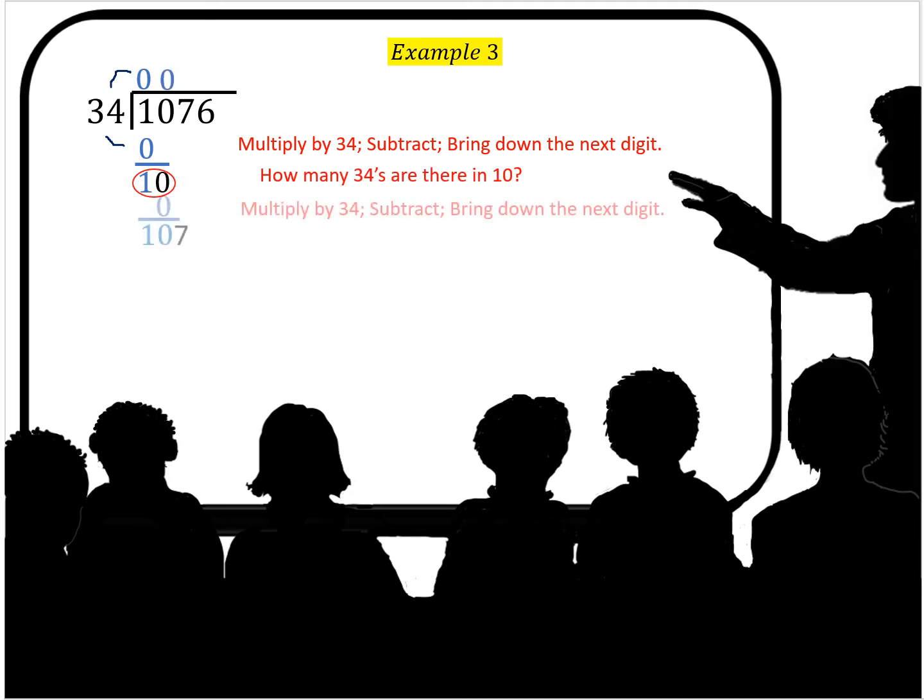How many 34s in 10? Zero. Zero times 34? Zero. We subtract, we get 10. We bring down the next digit 7.